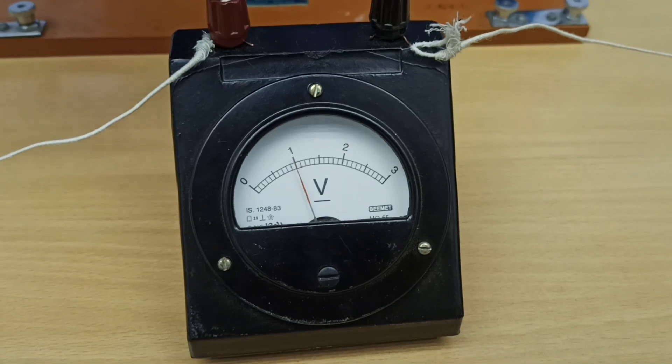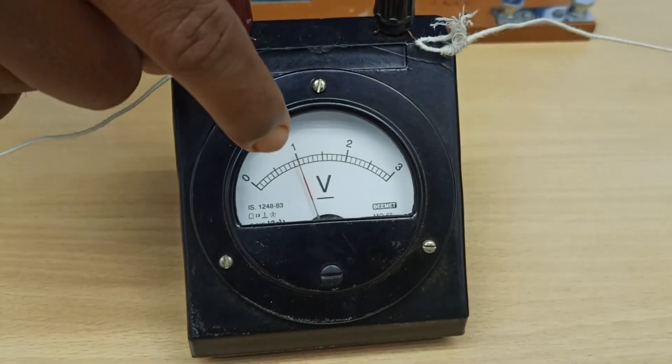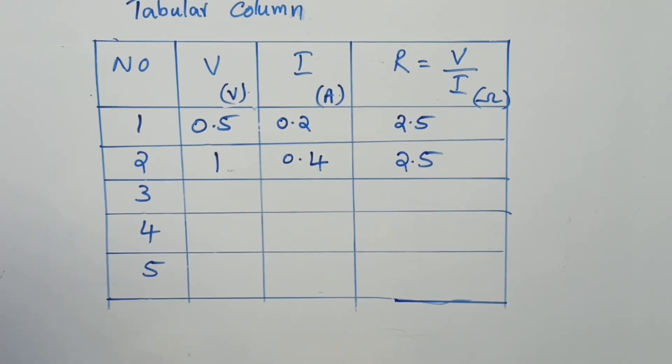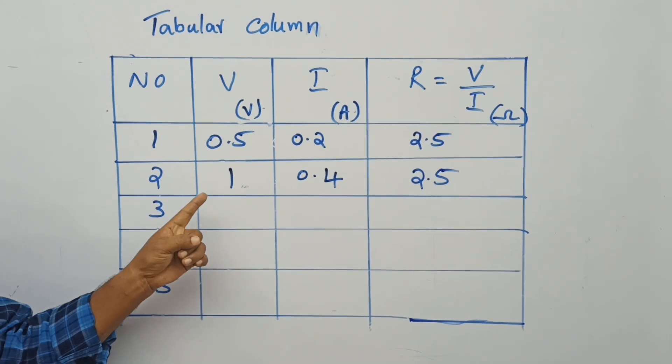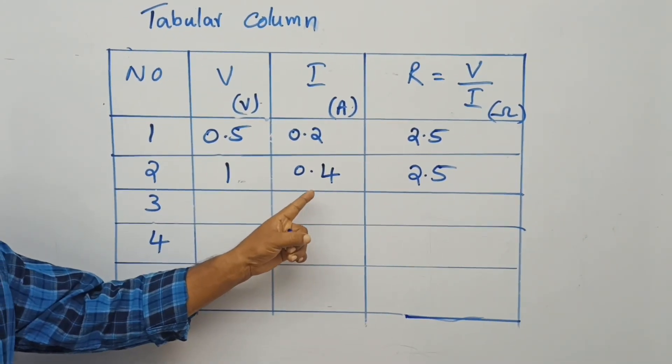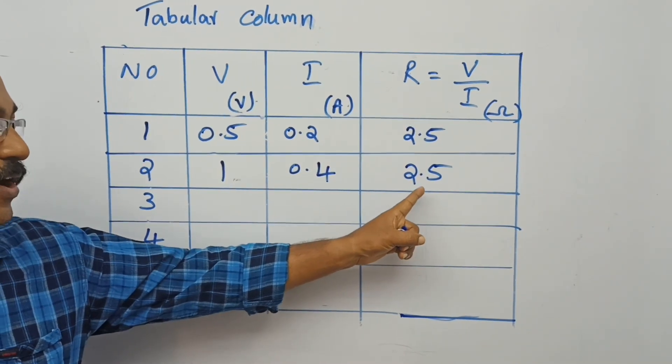Now another set of readings. Here it is 1 volt. Here it is 0.4 amperes. It is marked in the tabular column: voltage is 1 volt, current is 0.4 amperes, and the resistance is again 2.5 ohm.